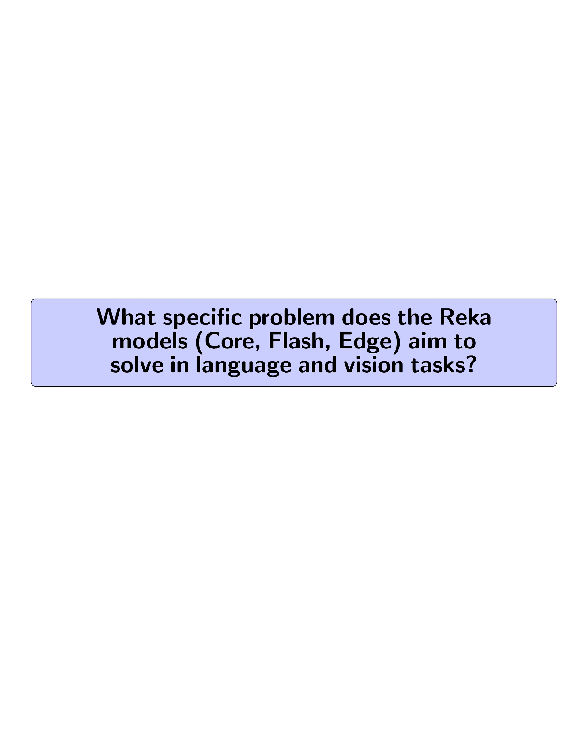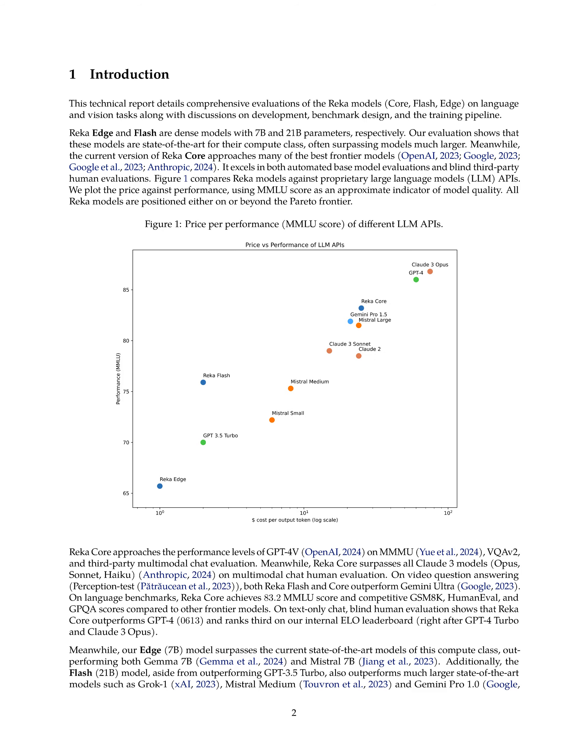What specific problem does the RECA models — Core, Flash, and Edge — aim to solve in language and vision tasks? The RECA models aim to solve the problem of advancing the state of the art in language and vision tasks by providing powerful and efficient models that excel in both automated base model evaluations and blind third-party human evaluations.